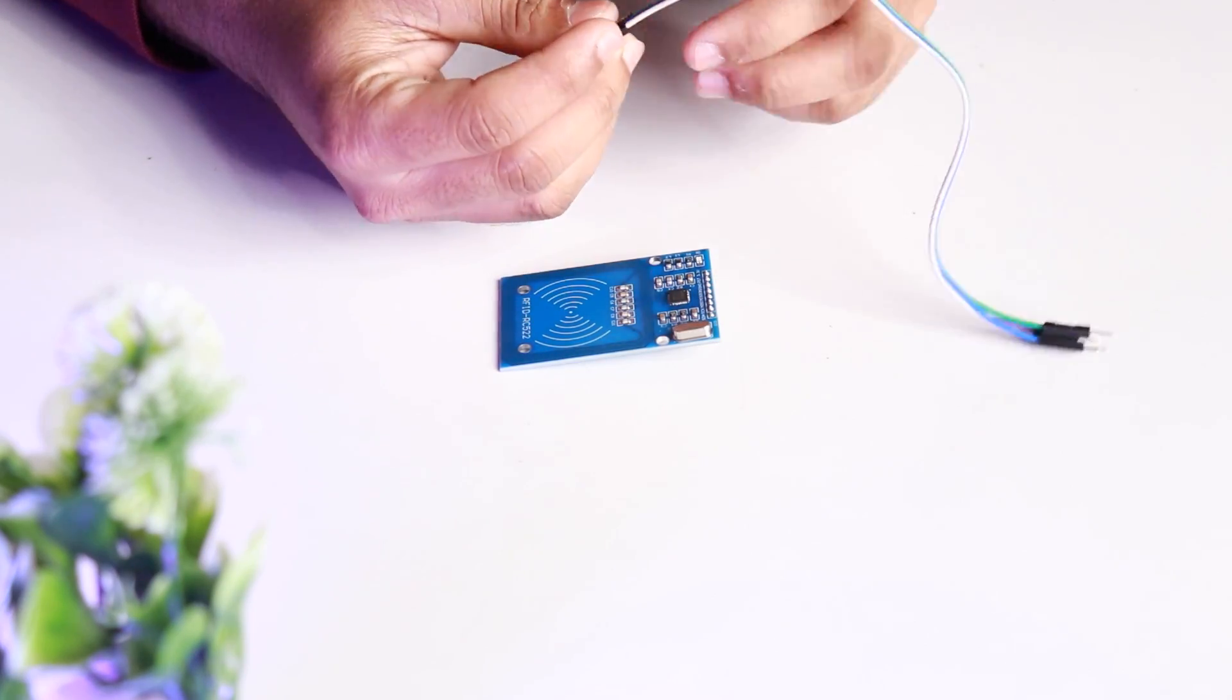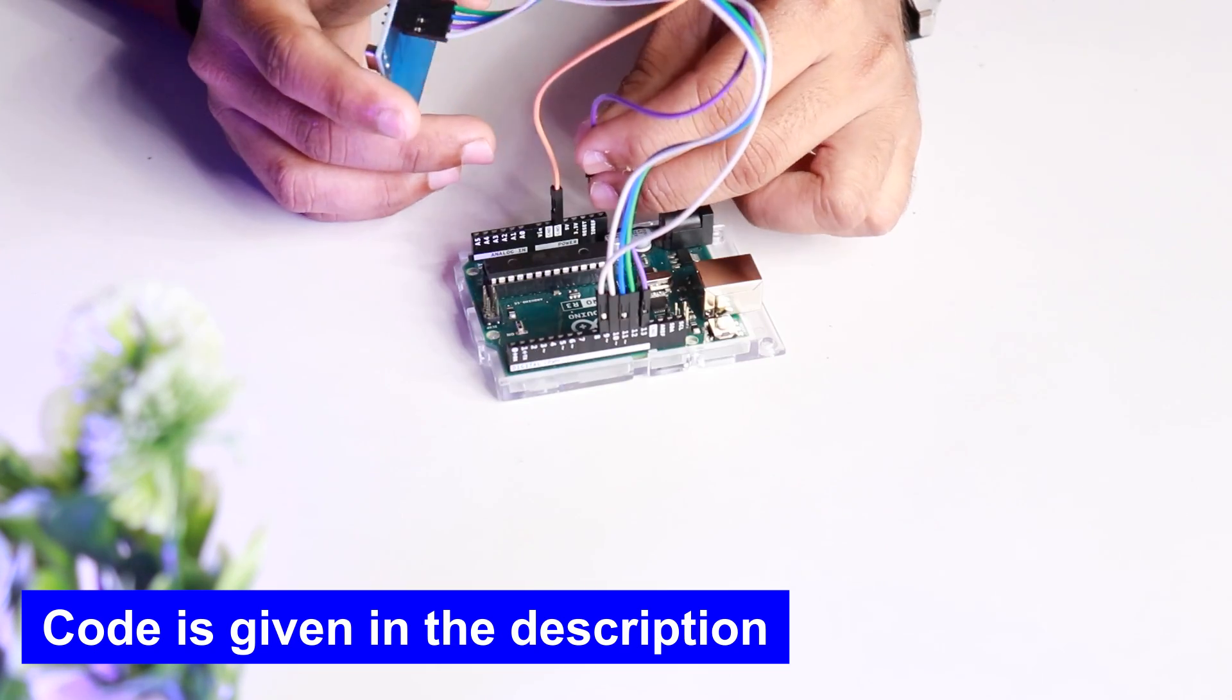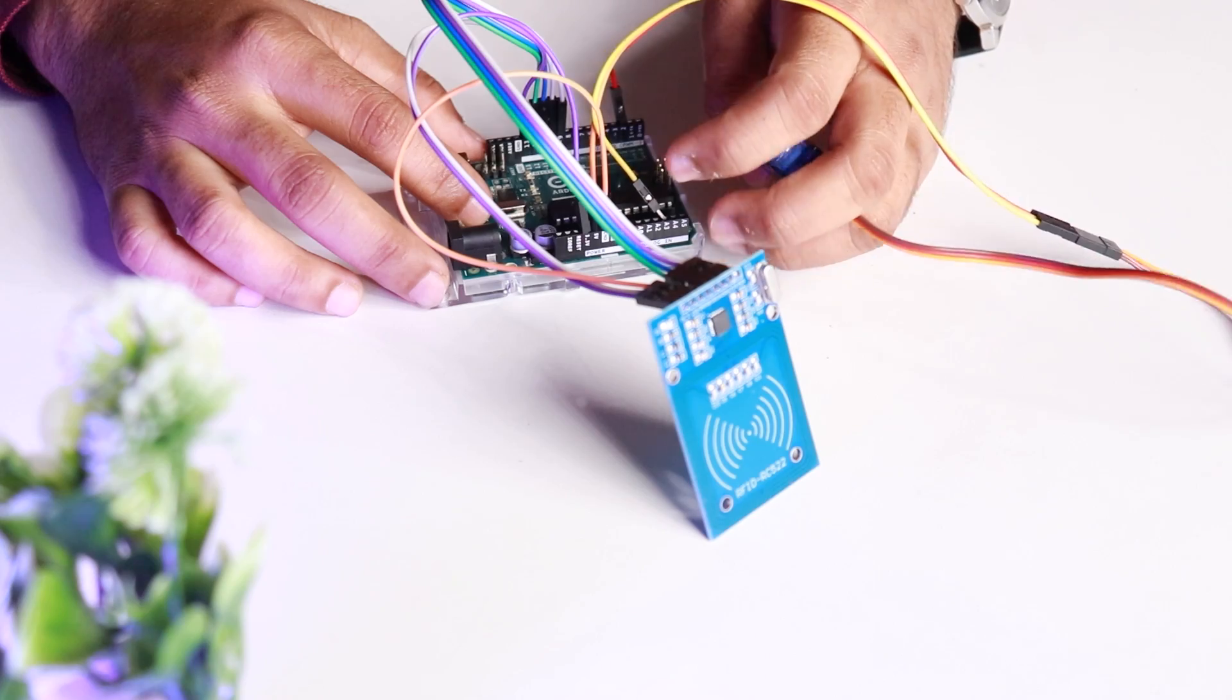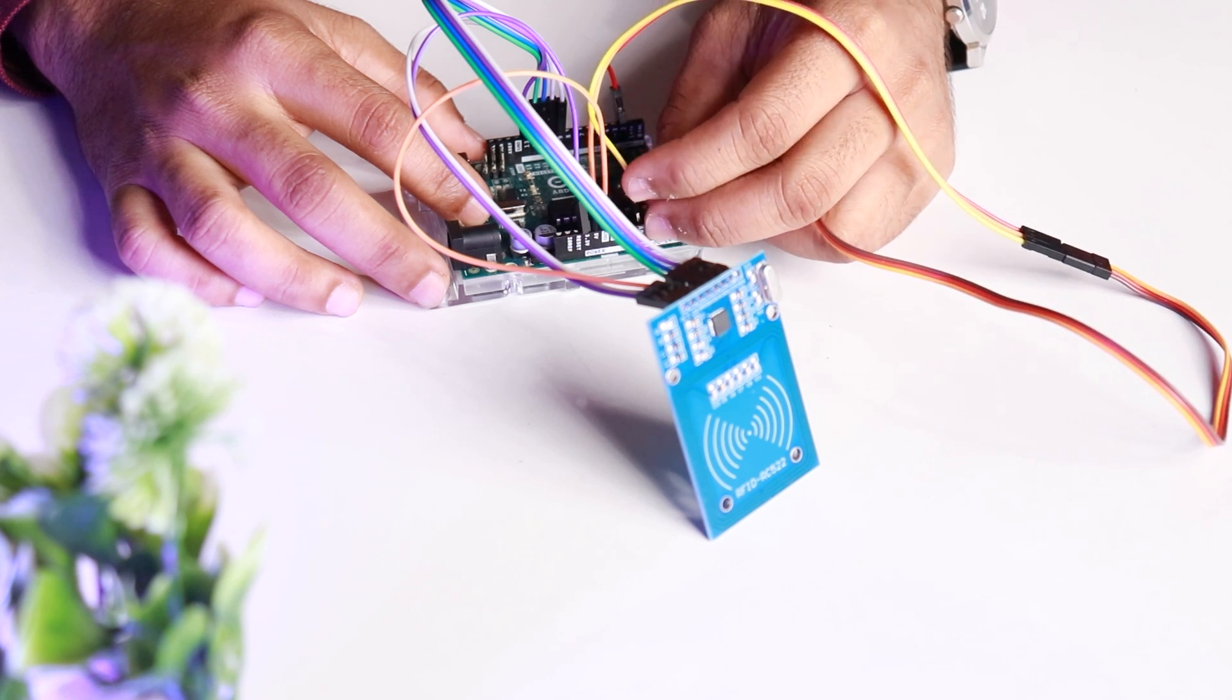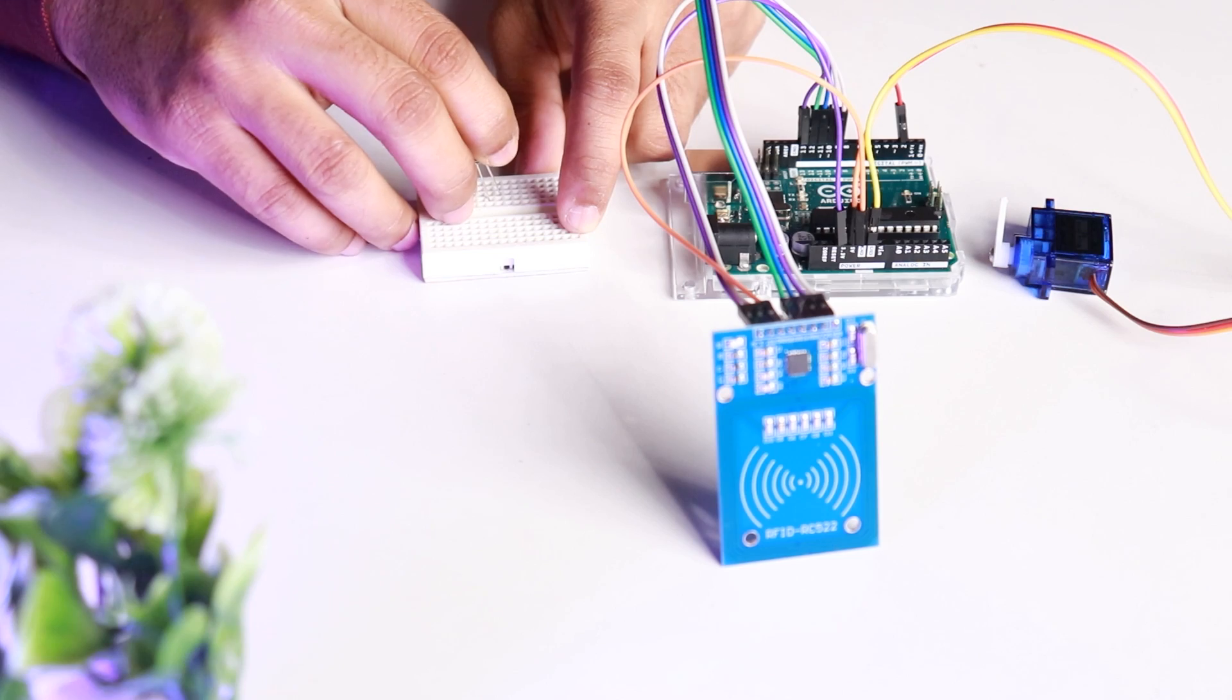Now let's connect the reader to Arduino, as shown on screen, using SPI pins and supply pins. Then connect the servo to pin number two of Arduino, and connect the green LED to pin three and red LED to pin four of Arduino using the breadboard.